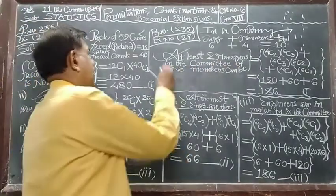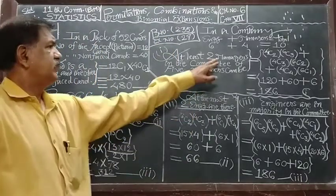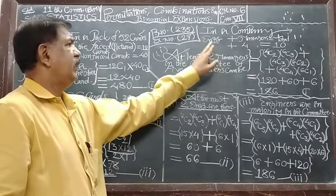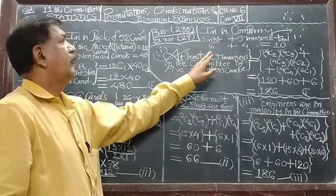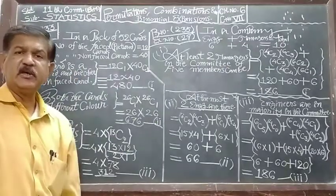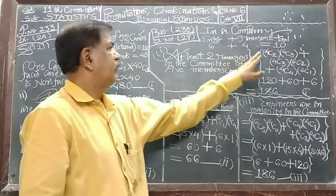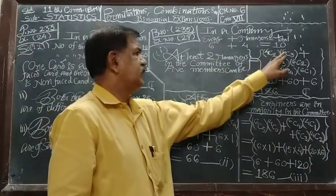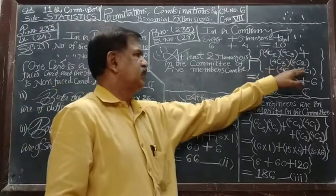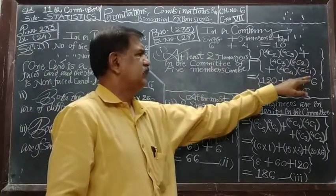At least 2 managers means 2 managers and 3 engineers, or 3 managers and 2 engineers, or 4 managers and 1 engineer. And the selection can be made by using this way: 2 managers means 4C2, engineer 6C3; 3 managers, 4C3, 6C2; or all 4 managers and remaining 1 engineer, 4C4 into 6C1.